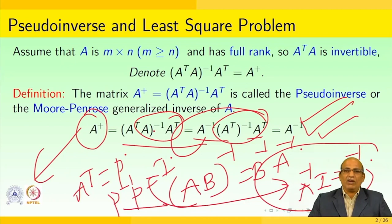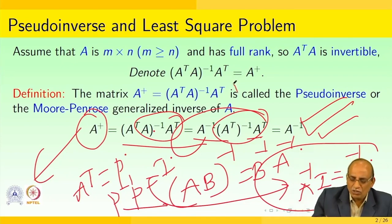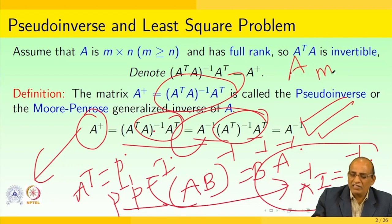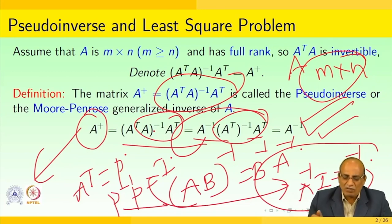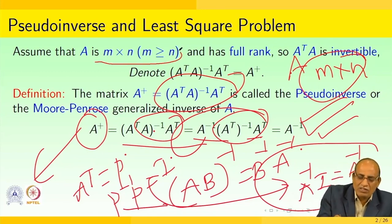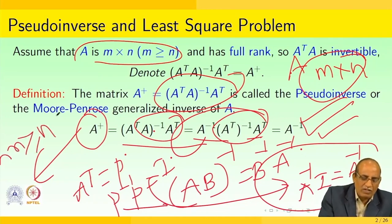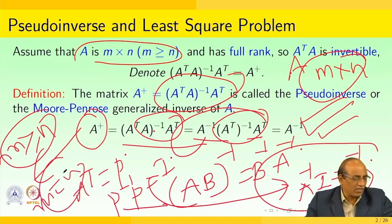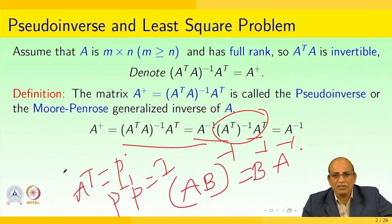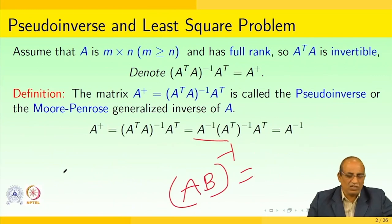The pseudo inverse is A transpose A whole inverse into A transpose. A is an m by n matrix. If it is a square matrix, many calculations simplify. In general, we speak about non-square matrices, which is why m is greater than or equal to n. If m equals n, then we have a square matrix. That is the basic idea of the pseudo inverse.